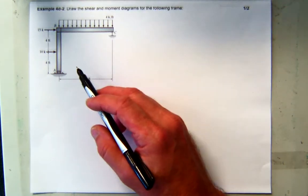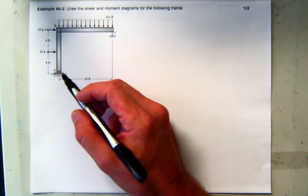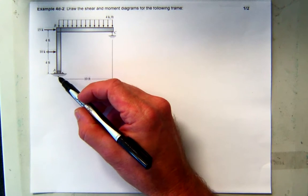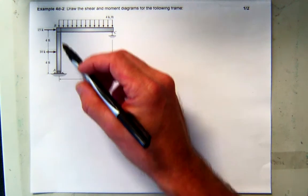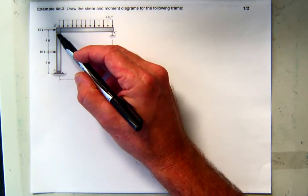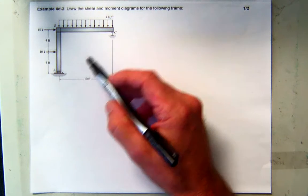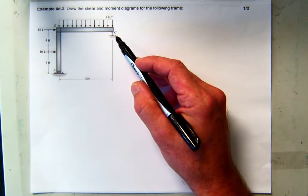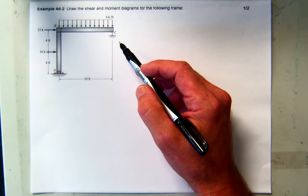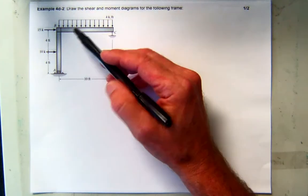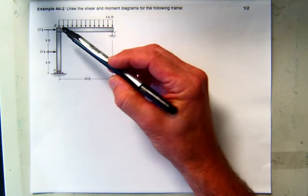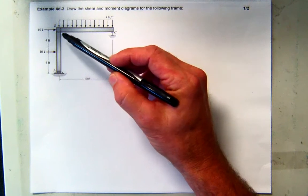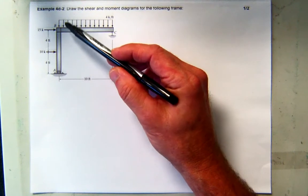We're going to draw the shear and moment diagrams for this frame. What we have here is a pin connection, fixed at B, and then a roller. So we're going to have two unknowns at one support. You should be able to find the reactions to get started. We will have to separate it at B and find the shear and moment at the top of AB and then at the beginning of BC.